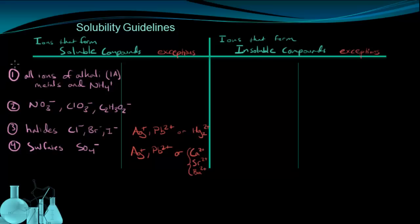But these are the four primary rules to remember for knowing which ions form soluble compounds. Now we're going to look at the ions that form insoluble compounds. And the first one of those, which is our fifth rule,